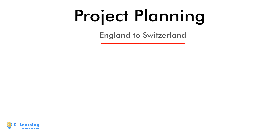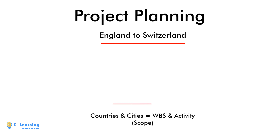Now let's come to project planning. Project planning is like planning from one point to another — just like our example from England to Switzerland. The countries and cities we mentioned in our example are now our WBSs and activities, which show our scope of the plan.